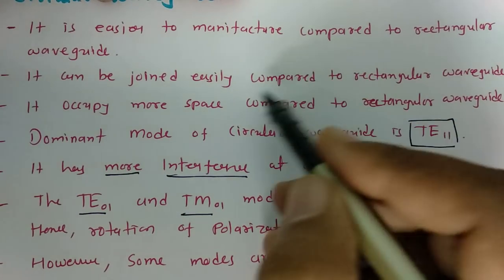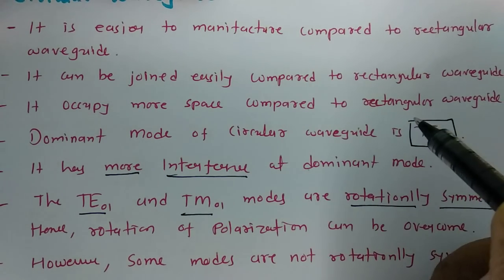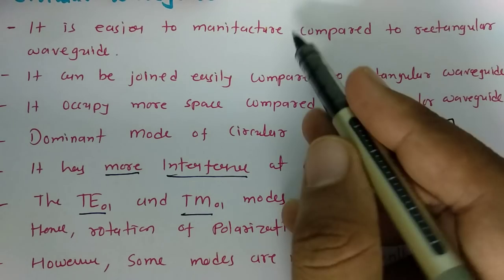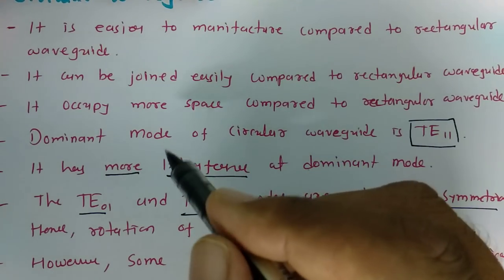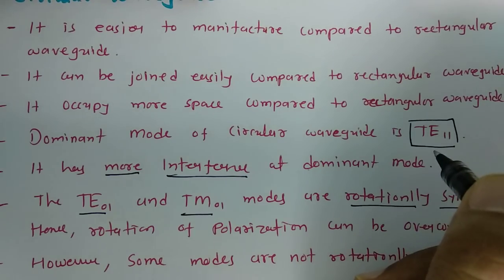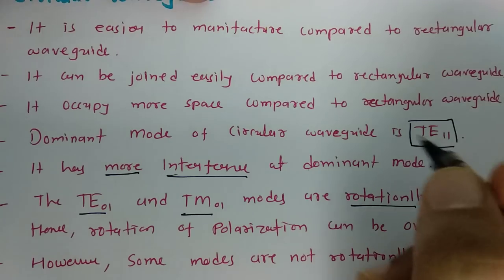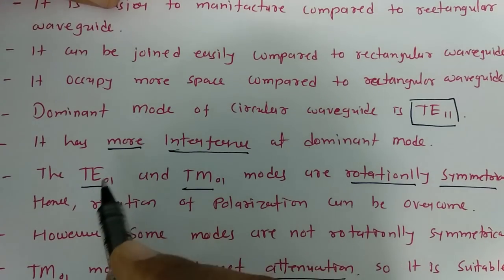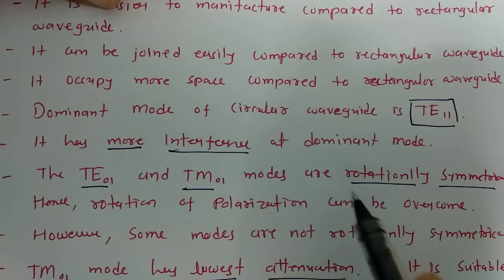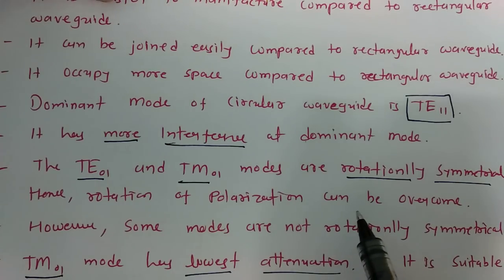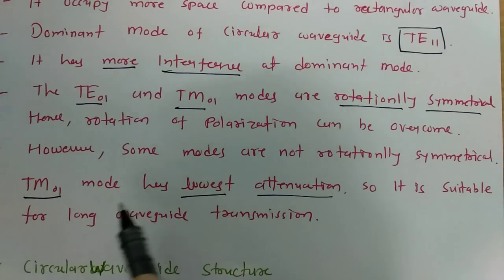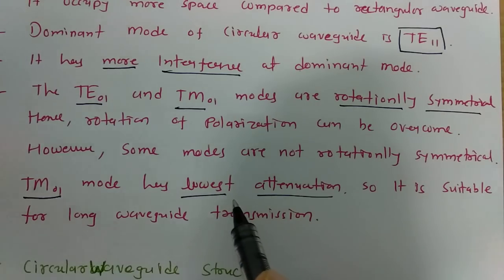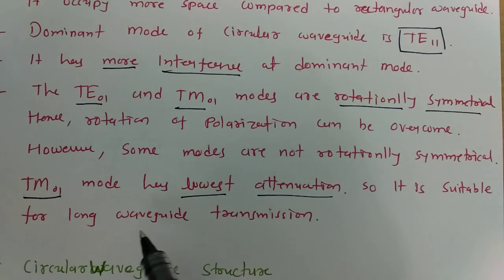To review: manufacturing is easy, joining is easy, but it occupies more space. The dominant mode is TE11, and at that mode interference is more. TE01 and TM01 modes are rotationally symmetrical, so rotation of polarization can be overcome, but polarization rotation will occur with other modes. TM01 mode has the lowest attenuation and is suitable for long-distance waveguide transmission.